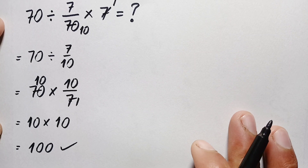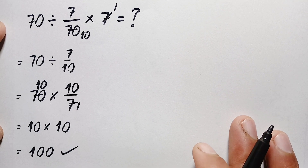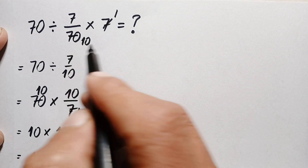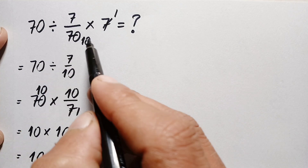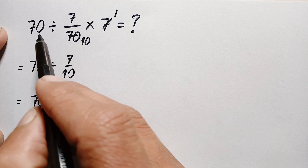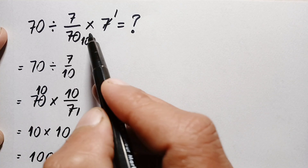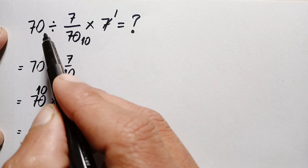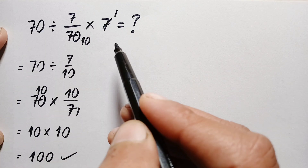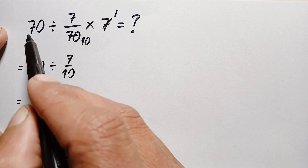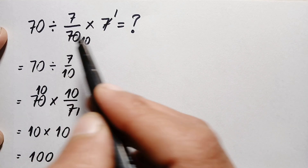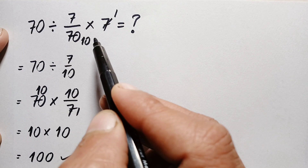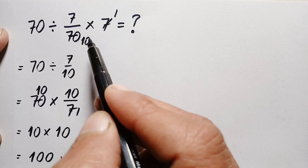But according to the order of operations, this answer is totally wrong — due to wrong order of operations. Look at the problem: we have two operations, division and multiplication. According to the order of operations, we have to simplify division or multiplication from left to right. There is division first from the left side, so that's why we get the wrong answer.